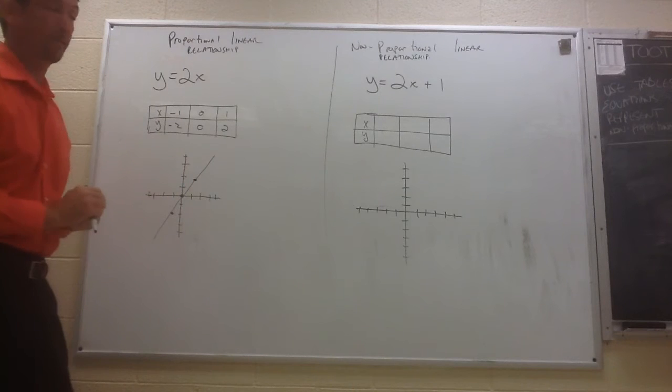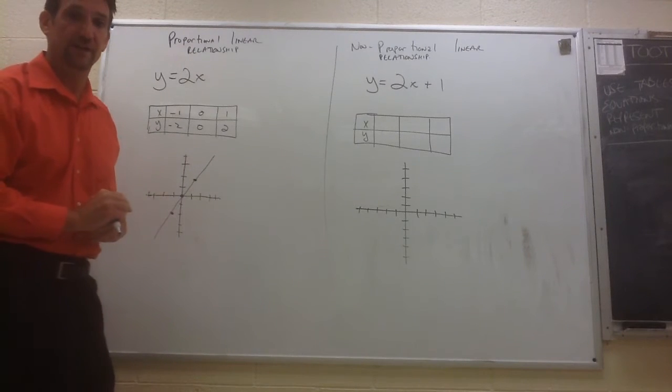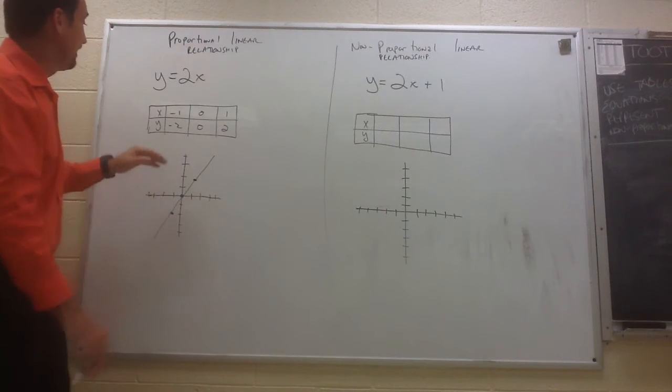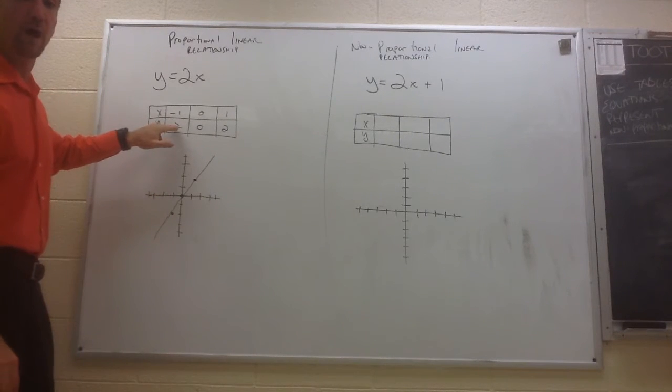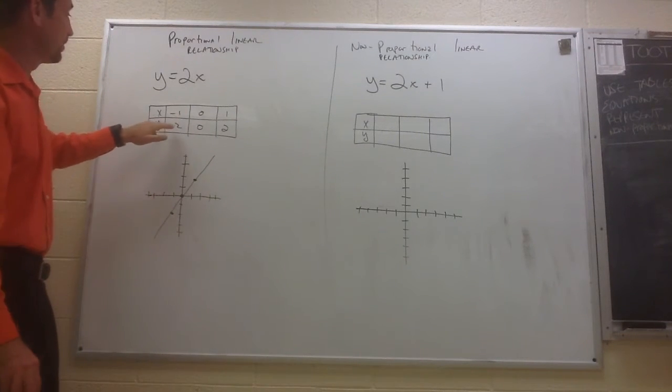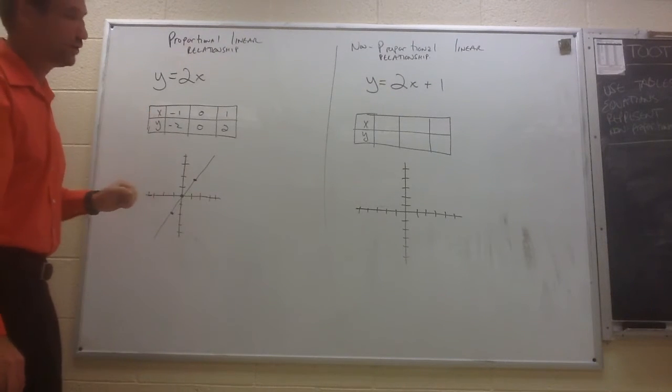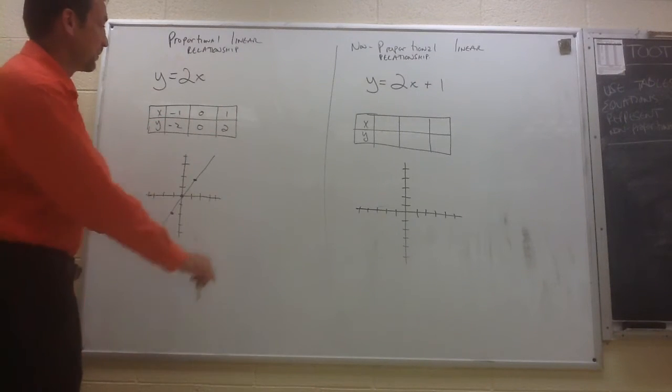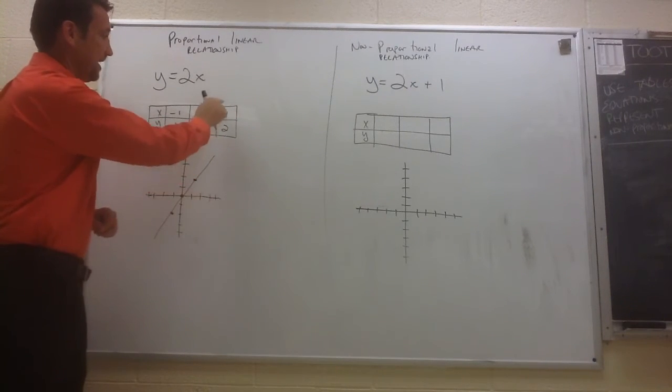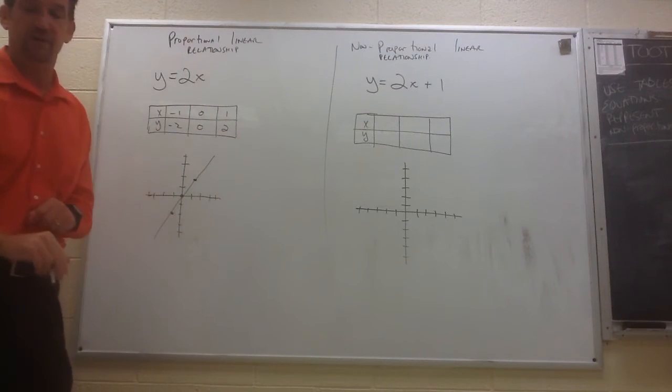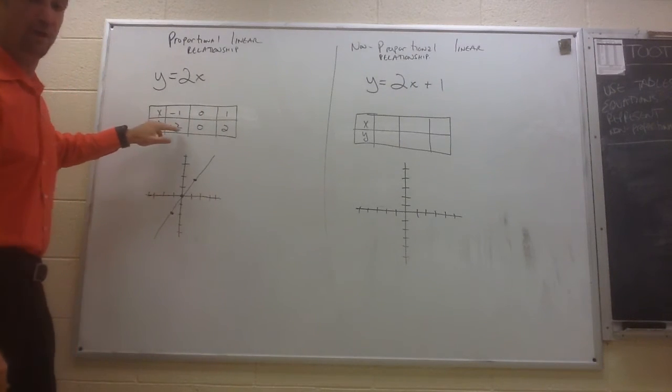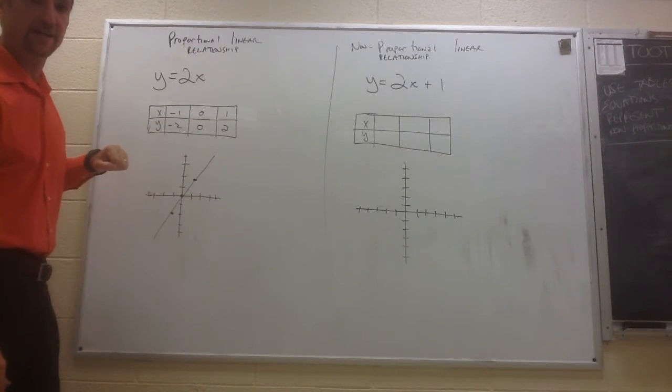So this is what we talked about proportional linear relationships. Now the proportional part of this comes from if we were to take the ratio of y and put it over x. If we put y over x, negative 2 over negative 1 equals 2. If I take 2 over 1, that's 2. If I were to find that change in my y values over my change in my x values, that is also 2. But it's proportional because the ratio of y to x is constant.